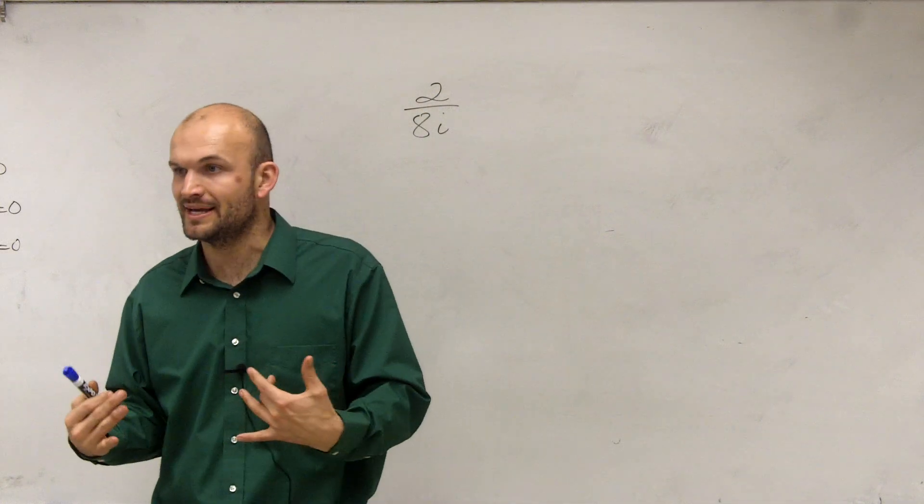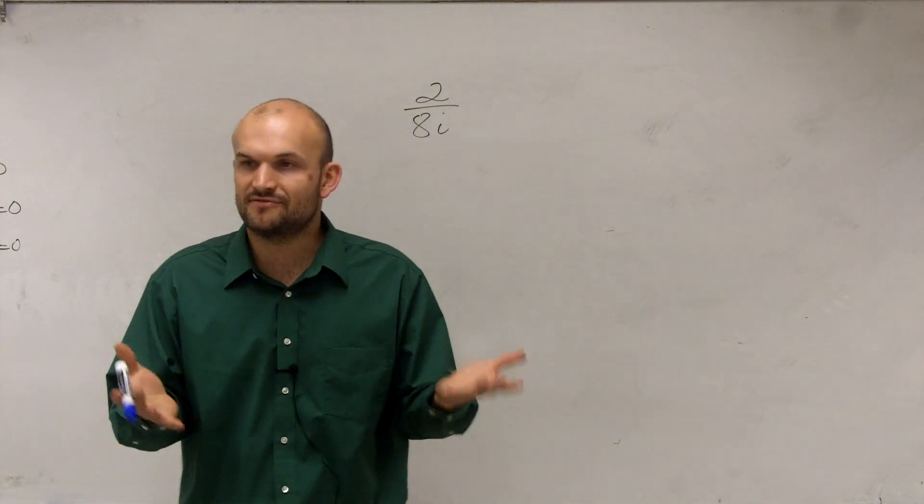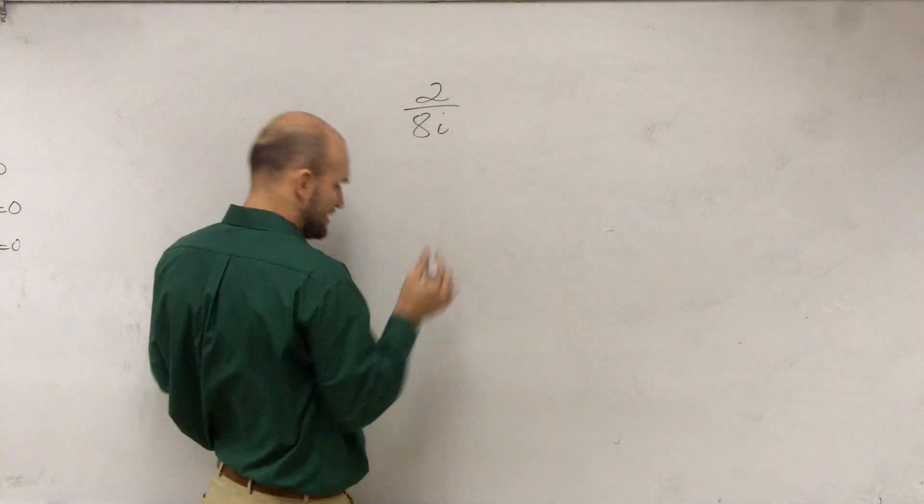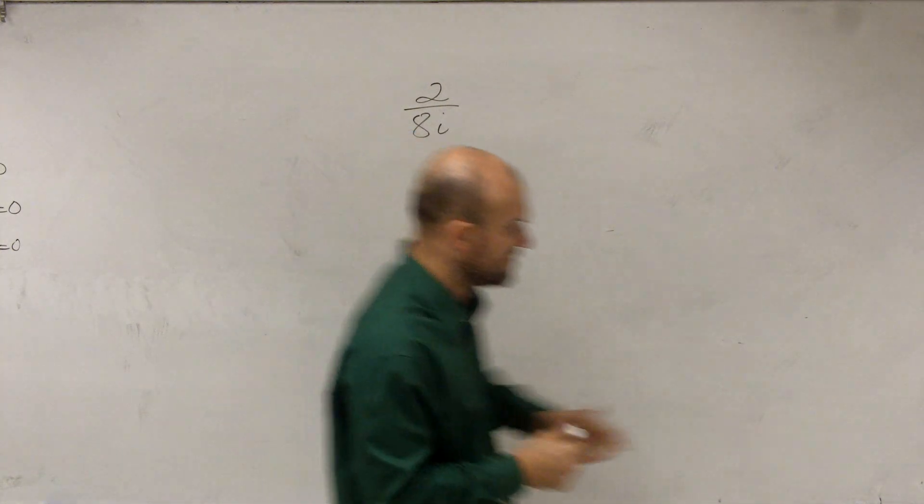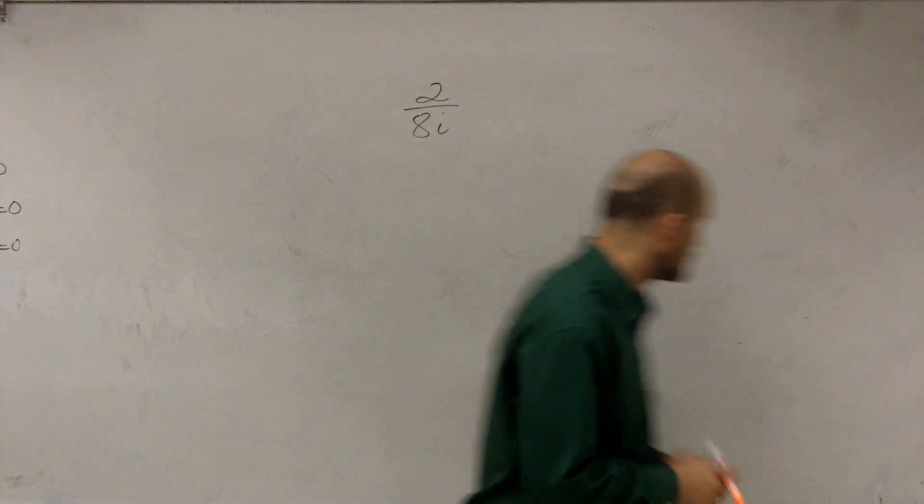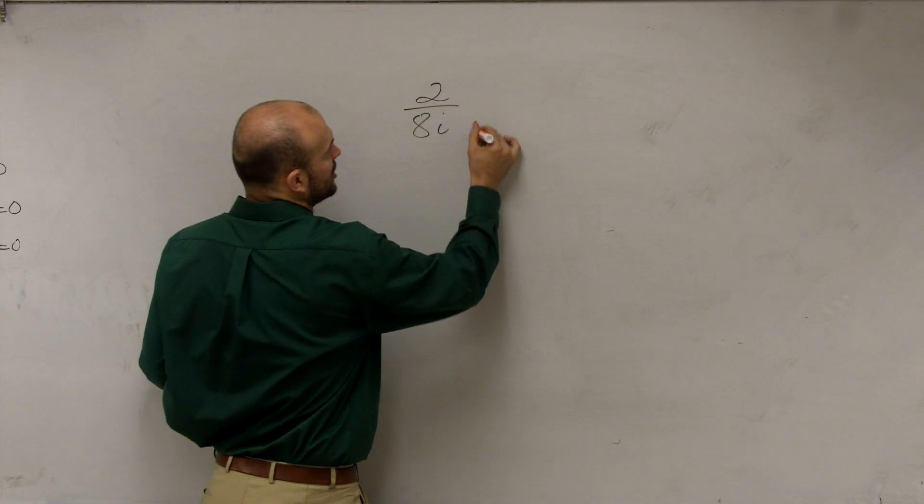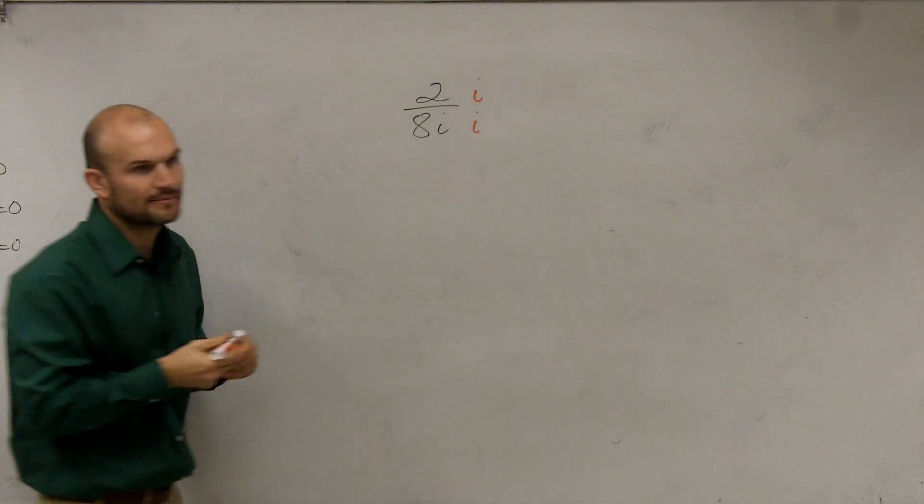So what we did is we simplified this without having it as a division problem. So to get rid of i, what we did is we took our very favorite color, hot orange, and we multiplied i on the top and bottom.